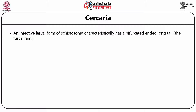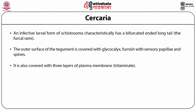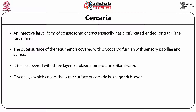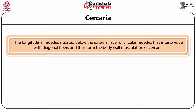Cercaria: an infective larval form of Cystosoma, characteristically has a bifurcated-ended long tail — the furcal rami. The outer surface of the tegument is covered with glycocalyx furnished with sensory papillae and spines. It is also covered with three layers of plasma membrane — trilaminate. The glycocalyx, which covers the outer surface of cercaria, is a sugar-rich layer. The tegument of Cystosoma mansoni characteristically has prominent backwardly positioned spines. A number of ciliated sensory papillae are found on cercaria.